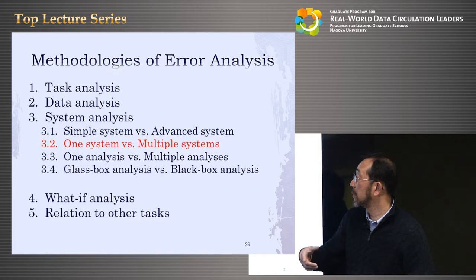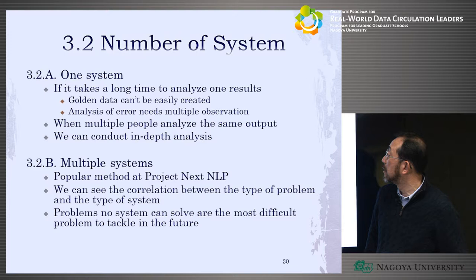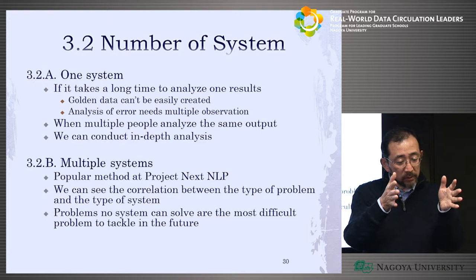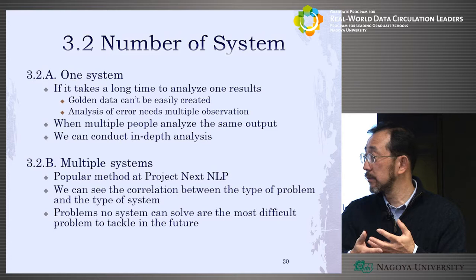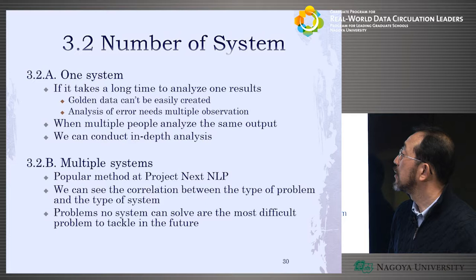So that's the benefit of using simple versus advanced systems. Regarding one system versus multiple systems: at the beginning, I thought that multiple systems are good because one system can make very specific errors, and with many systems you understand what kinds of problems are common in the task. But actually, one system is good too, or even necessary for some tasks.